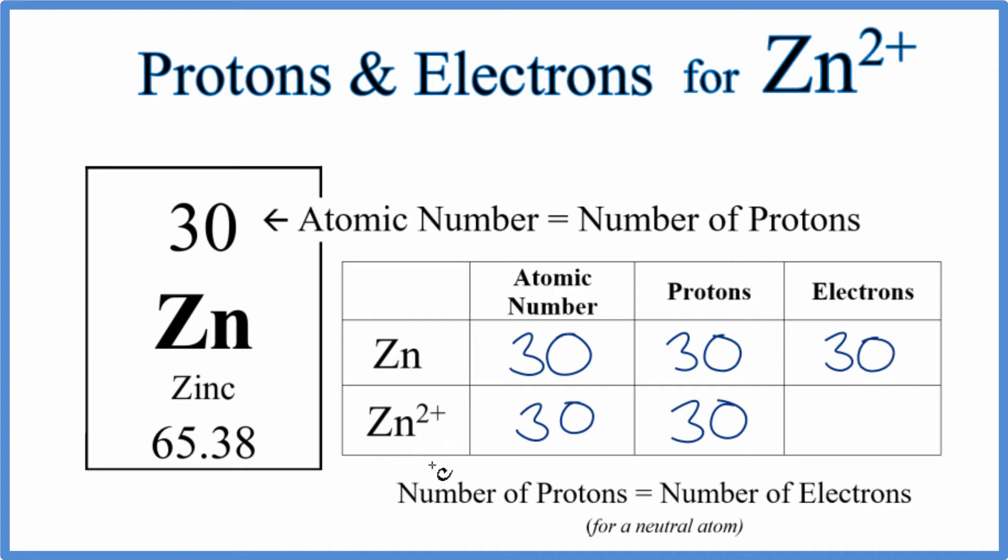Zn²⁺ isn't neutral. We have this charge written up here. When we have a positive charge, that means we've lost electrons. Think of it this way: electrons are negative. If we lose negative charges, we become positive. So for Zn²⁺, we lost two electrons. 30 minus 2 gives us 28. That's the number of electrons for Zn²⁺.